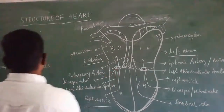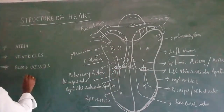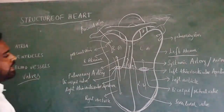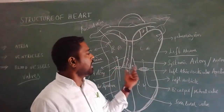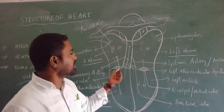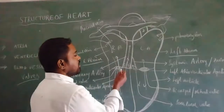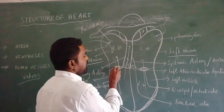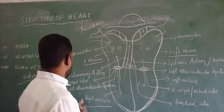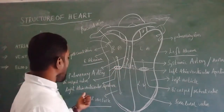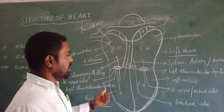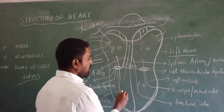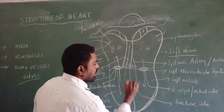Regarding the internal valves of the heart: there is the tricuspid valve and the bicuspid valve. The tricuspid valve guards the right atrioventricular aperture. During ventricular contraction, the tricuspid valve closes the right atrioventricular aperture to prevent blood from flowing back from the right ventricle into the right atrium.